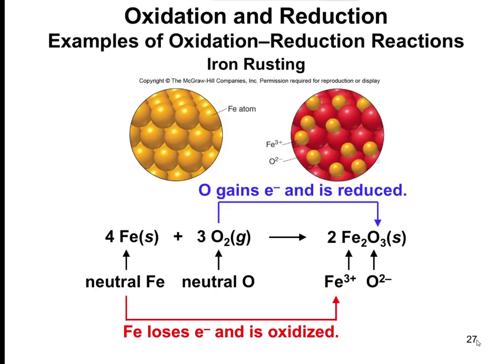Here is another example of a redox reaction: 4 Fe + 3 O₂ → 2 Fe₂O₃. One thing you'll notice is there are no visible charges. In the previous example, it was easy to see electrons being moved because you could see the change in charges. Here, iron is neutral and oxygen is neutral, so you have to look more carefully.